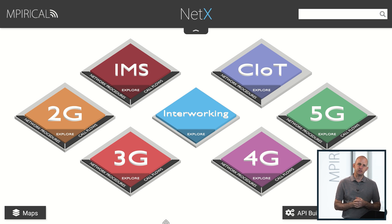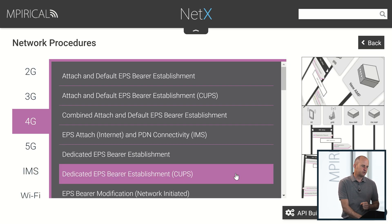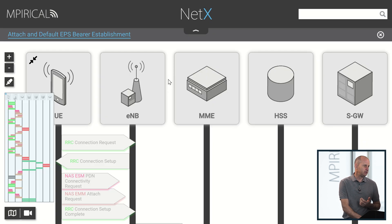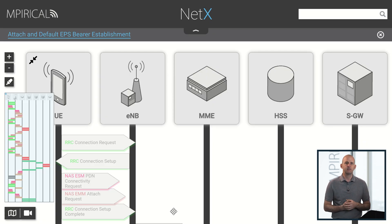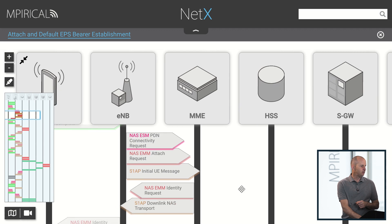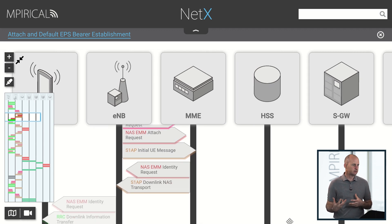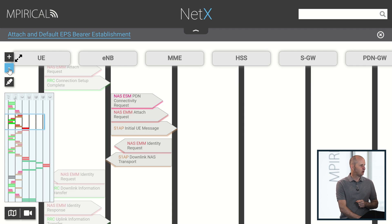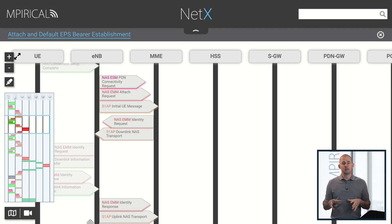We've also got network procedures. If I open up 4G, there's a whole bunch of different examples of network procedures — a big list for 4G and an even bigger list for 5G. If I click on one of these network procedures it's a traditional signalling flow. We've opened up an attach and default EPS bearer establishment in 4G, and straight away you can see an indication of where you are in the signalling flow — the picture-in-picture will orientate us. We can manipulate what we're looking at on screen: we can hide the iconography at the top and zoom out to get more of the signalling flow on screen, so you can adjust this to however your monitors are set up.